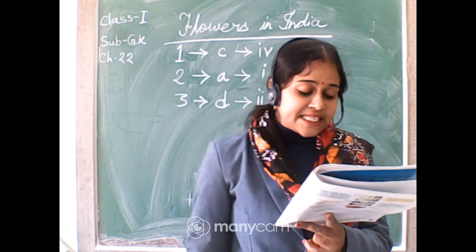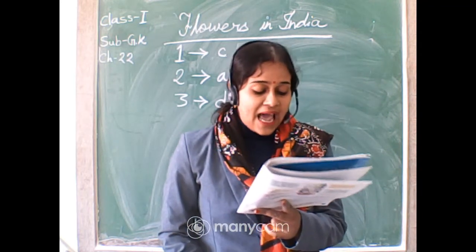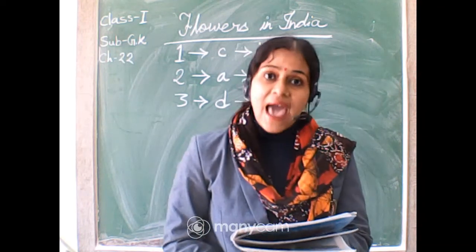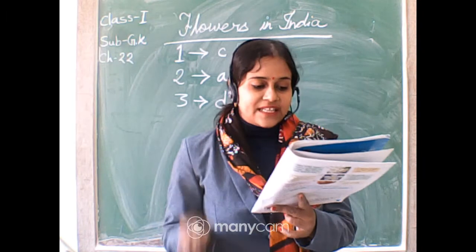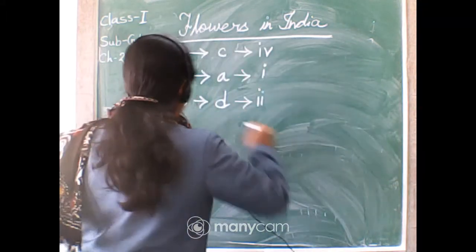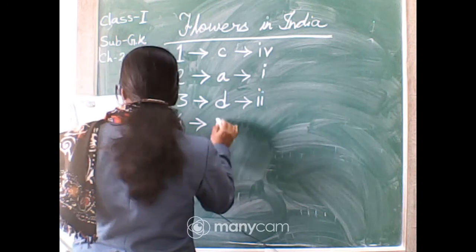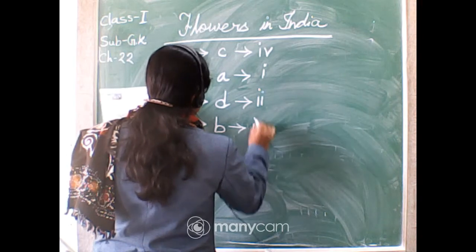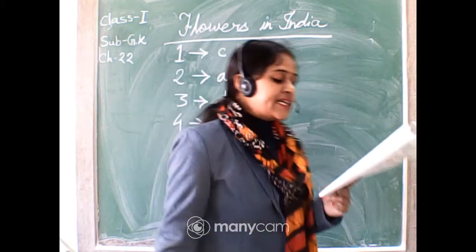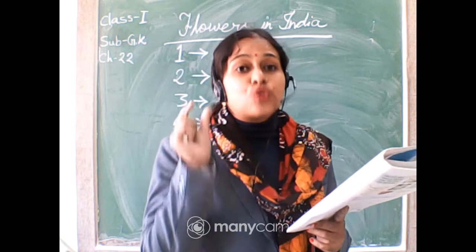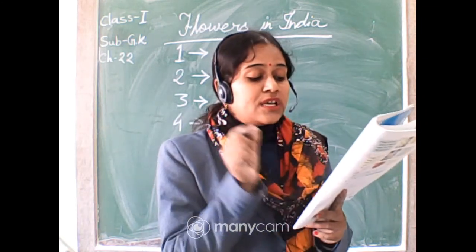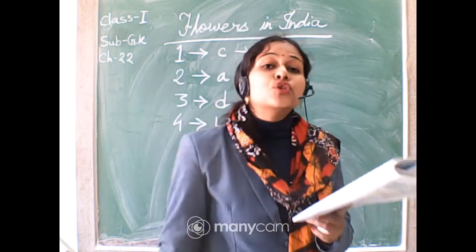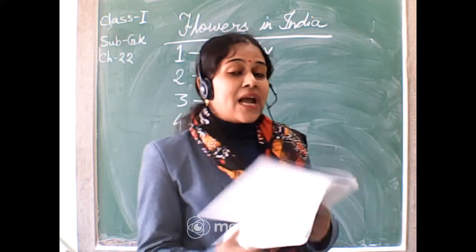Rose has a lovely scent. It can have many colors like red, pink, yellow, white, and even black. The picture of Rose is B, so four joins picture B. The stem of the rose has sharp thorns.